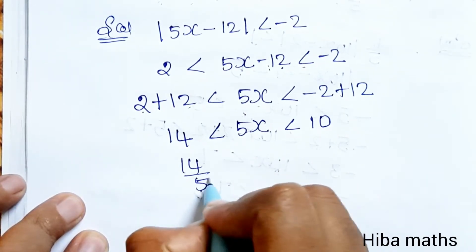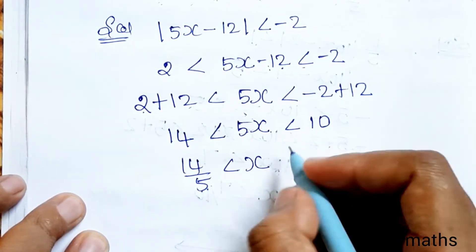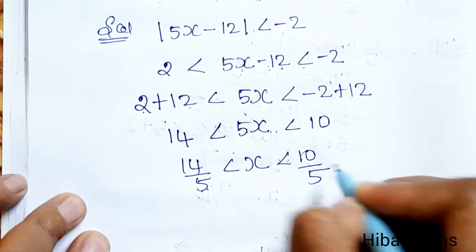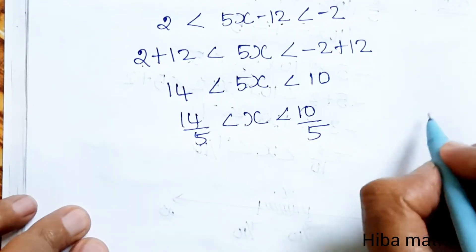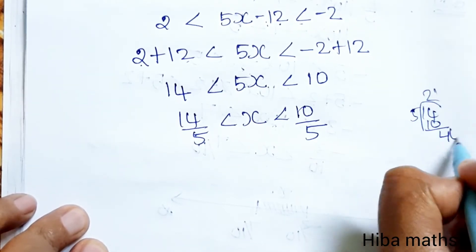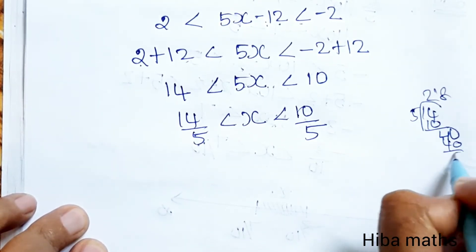2 plus 12 is 14, less than 5x, less than 10. Dividing by 5, we get 14 by 5 less than x less than 10 by 5. Solving 14 by 5: 2s are 10, balance 4, 8s are 40. So 2.8.